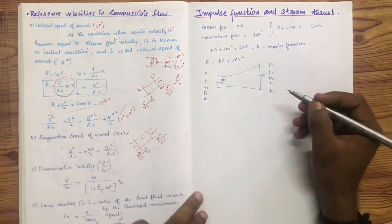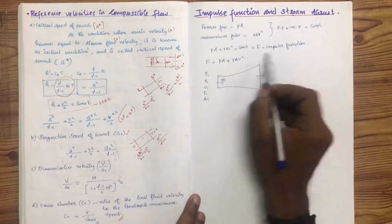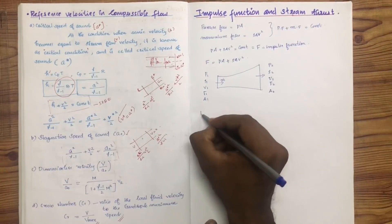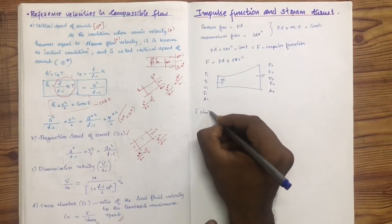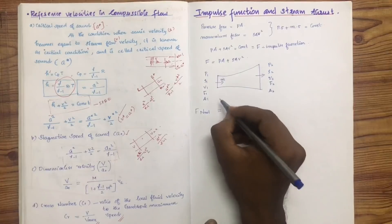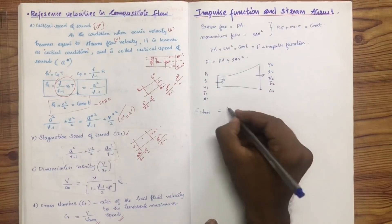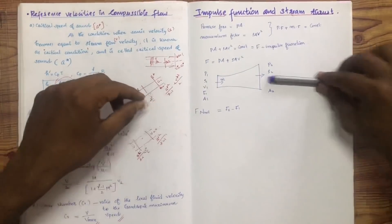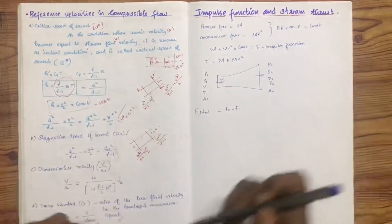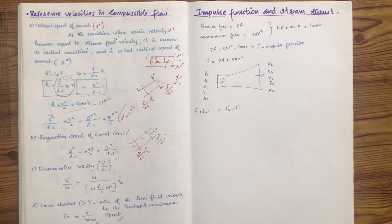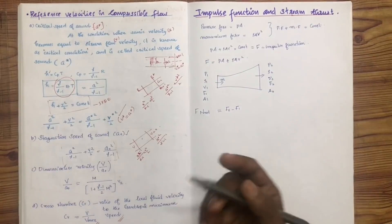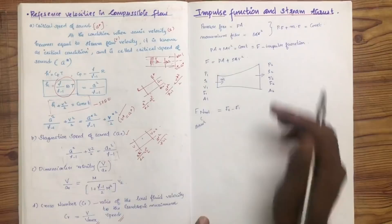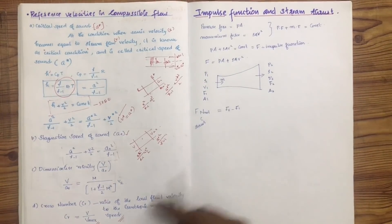At each section we have pressure force and momentum force contributing to the net force. The net force F-net equals F2 minus F1. Thrust can be calculated as F2 minus F1.